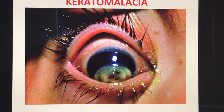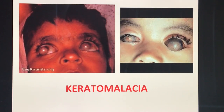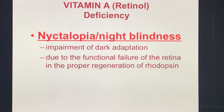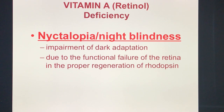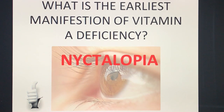Deficiencies of Vitamin A include keratomalacia — ulceration or scarring of the sclera — and nyctalopia, or night blindness, which is impairment of dark adaptation due to failure of the retina to properly regenerate rhodopsin. The earliest manifestation of Vitamin A deficiency is nyctalopia, or night blindness.